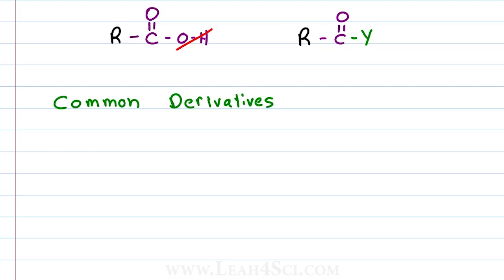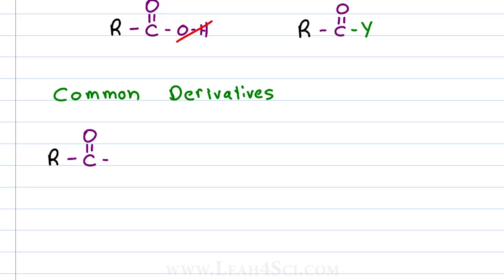Let's look at some common derivatives from most to least reactive. If I replace the OH with a halogen, for example chlorine, that will give me an acid halide as the general class or an acid chloride for the specific molecule. This is also called an acyl chloride or an acyl halide.